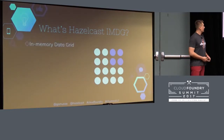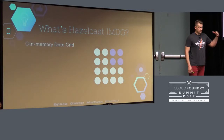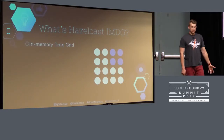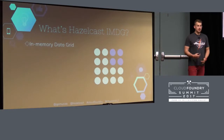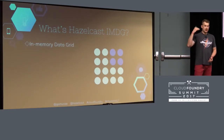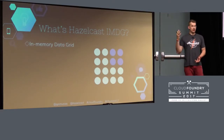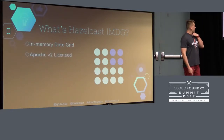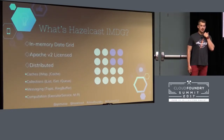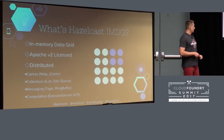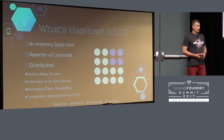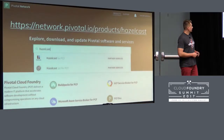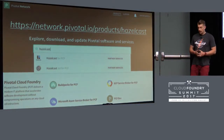Now let's talk about some practical things. Hazelcast provides capabilities for building distributed caches. It's in-memory, meaning data is stored in operational memory of the member — not on disk — so the access pattern is very quick. It's Apache 2 licensed and provides many different APIs. Today we'll focus on caching capabilities but also touch on messaging and computing features.